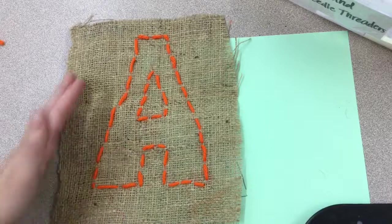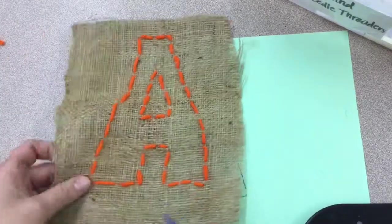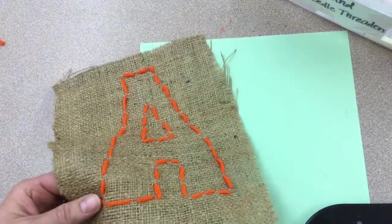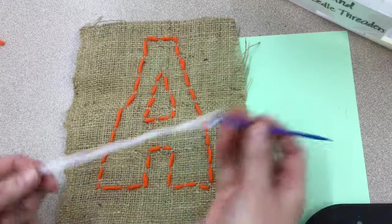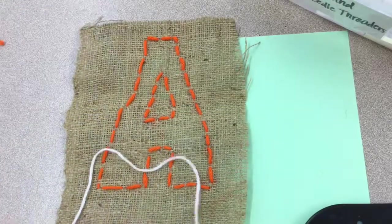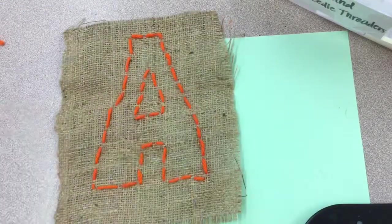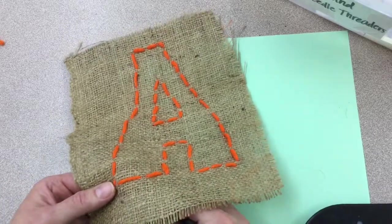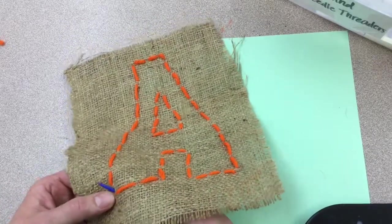If you want your stitching to not just be an outline, we can do something called a satin stitch, which is a way to fill in. So I've already threaded my needle. I've tied my knot at the end. I've chosen a different color. And I'm going to start over here at the corner, as close to that orange as I can.